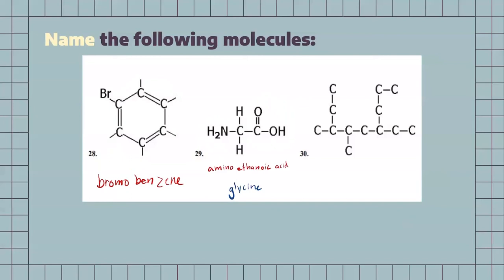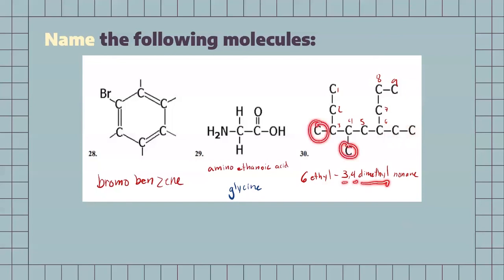For our next one, we have this beautiful chain of carbons that we have the pleasure of naming. How we tackle these is by finding the longest chain. Number all of your carbons and find the longest chain. The longest chain that I found is 1, 2, 3, 4, 5, 6, 7, 8, 9 carbons. Then we just have to figure out which groups are attached where. We have a methyl group attached at carbon 3, another methyl group attached at carbon 4, and an ethyl group attached at carbon 6. To properly name this, you need to put them in alphabetical order for the chains on the side. So, we would name this 6-ethyl, 3,4-dimethyl for the two methyl groups, and because our longest chain was 9 carbons, it would be nonane — 6-ethyl-3,4-dimethylnonane.